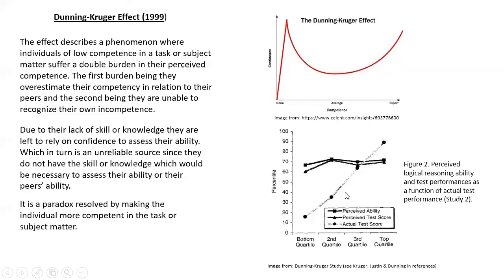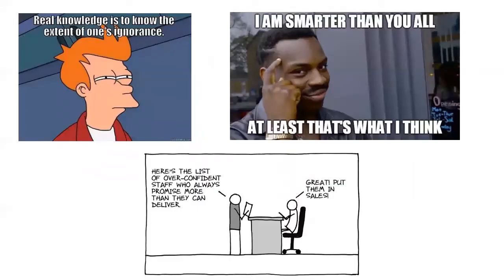That's basically the Dunning-Kruger effect. As a meme puts it: 'Real knowledge is to know the extent of one's ignorance.' To beat the Dunning-Kruger effect, you have to know your own ignorance — but that's the paradox. The idea that you're smarter than the average person. And here's a note about overconfident staff who always promise more than they can deliver — their confidence probably gets them further in sales than their actual knowledge does.